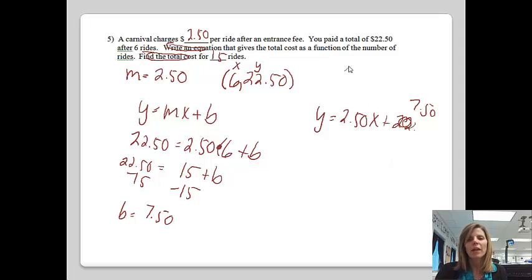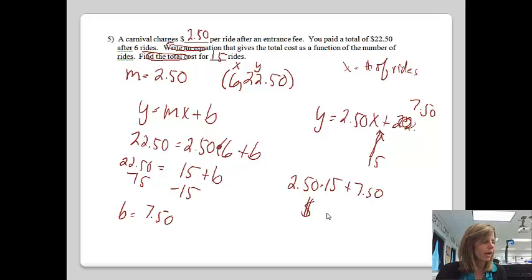So all we need to do now is just plug in our 15 for the x. So the total cost is going to be $2.50 times 15, plus $7.50. And if we work that out, that should end up being $45 for 15 rides. So hopefully now you can write an equation of a line when you're given the slope and a point.